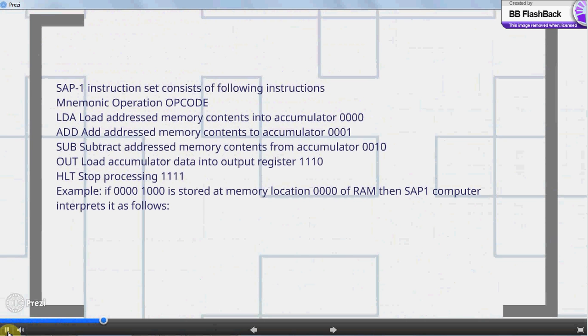SAP-1 instruction set consists of following instructions: LDA, load addressed memory contents into accumulator, opcode 0000; ADD, add addressed memory contents to accumulator, 0001; SUB, subtract addressed memory contents from accumulator, 0010; OUT, load accumulator data into output register, 1110; HLT, stop processing, 1111.